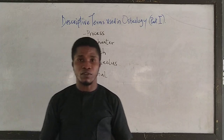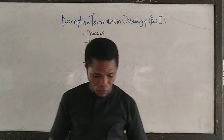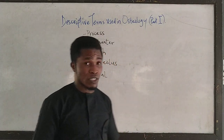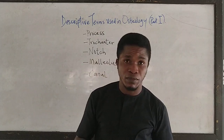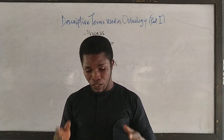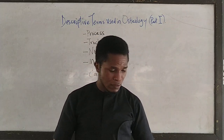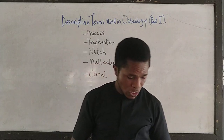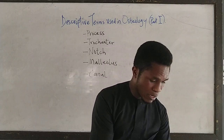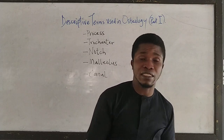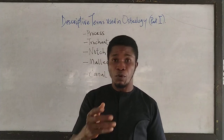There are more terms, but for just this video we will be looking at just these few terms. The first term we shall be looking at is a process. What is a process? A process is a projection or an outgrowth on the surface of a bone.